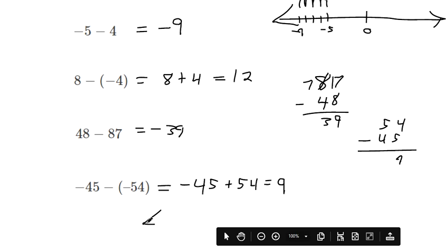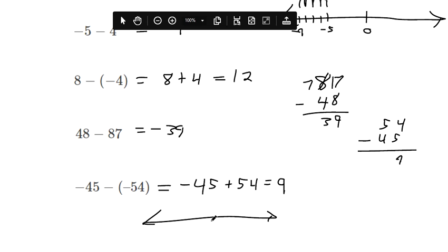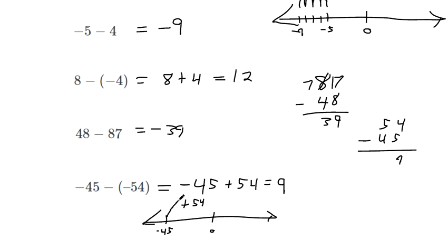And visualize it again on a number line here. Negative 45 is here. If you add 54 to it, that means you need to go 54 spaces to the right. So it's going to put us a little bit over the zero mark. If you count out all those digits, that's a lot of counting to move it 54 little spaces. But if you were to do that, you'd hit 9.